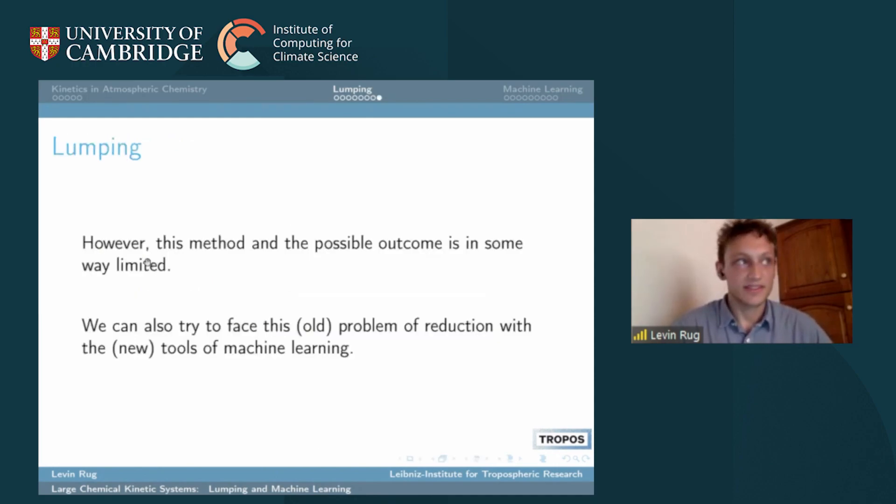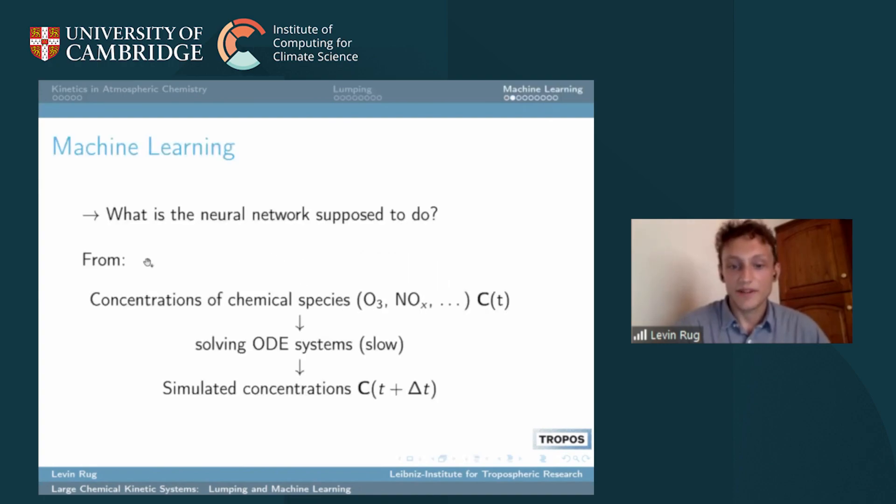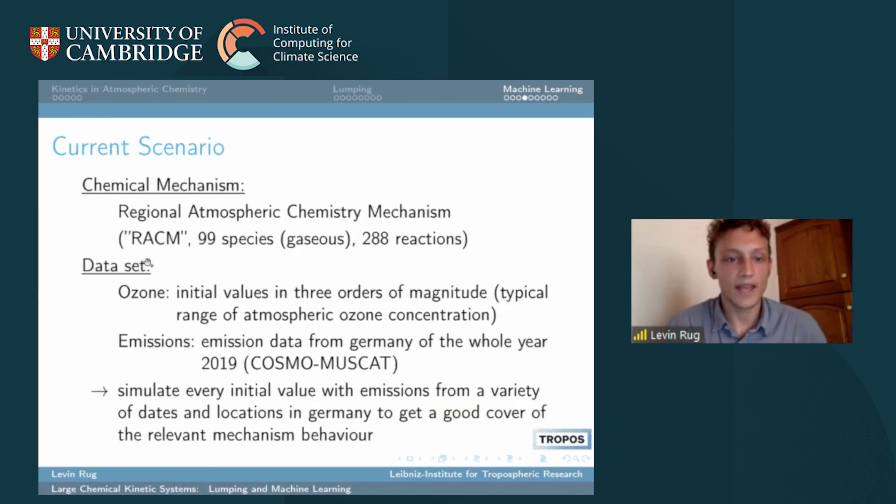Machine learning is much faster but it's a black box, and that's why we cannot measure accuracy so nicely, but we tried it. As I said, very simple: traditionally we feed concentrations of chemical species into the solver which is very slow and then we get the next concentrations. But now we feed the concentrations into a neural network, we can evaluate it very fast, and then we get simulated concentrations.